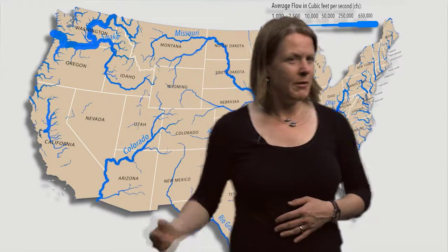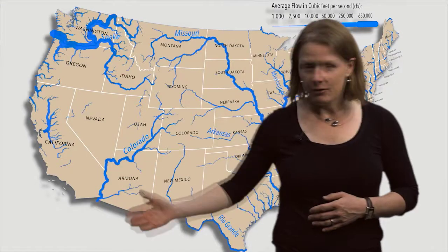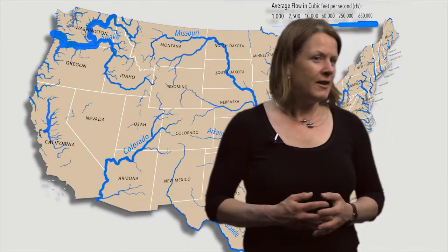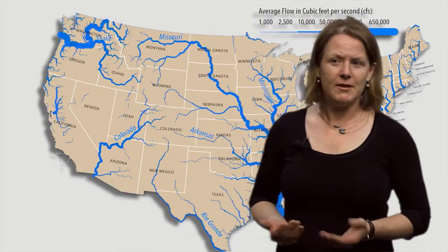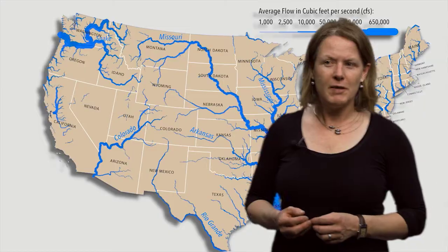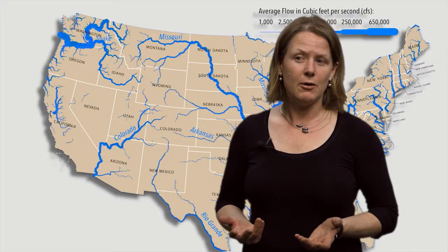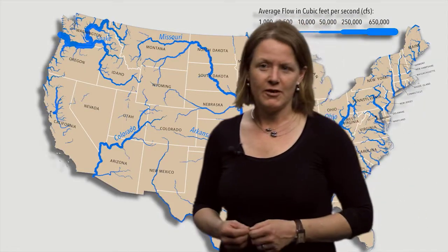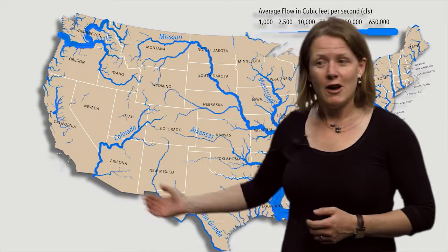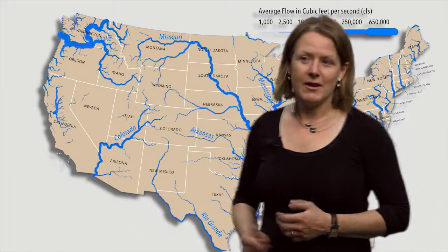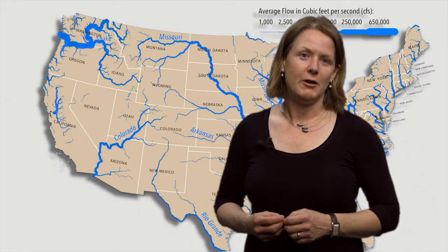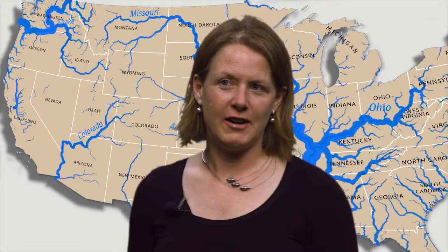As you can see in this map, while the Colorado River does not compare with the Mississippi and the Columbia River in terms of its average flow, it is the largest river system in the southwestern region of the U.S. and the fifth longest stream of the United States. The Colorado River Basin covers about 250,000 square miles, which is about the size of Texas.